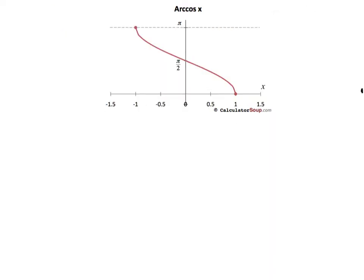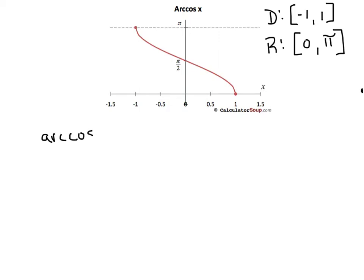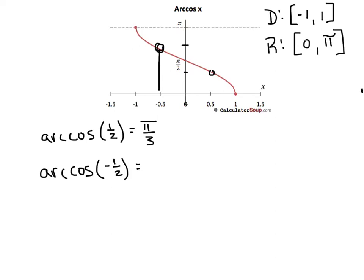For arc cosine, our domain is just like the last picture, from negative 1 to 1. But our range for this function is from 0 to π — if we went any higher than π, it would fail the vertical line test. For arc cosine of 1/2, I'm looking for an angle: it looks like 60 degrees, which is π/3. The tricky one is arc cosine of negative 1/2 — go straight up from negative 1/2, and that angle is a little bigger than π/2 but smaller than π. 60 degrees is the reference angle, so we're really referring to 120 degrees, which converts to 2π/3.